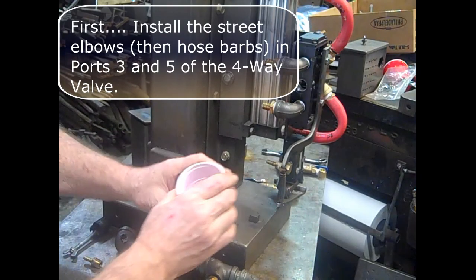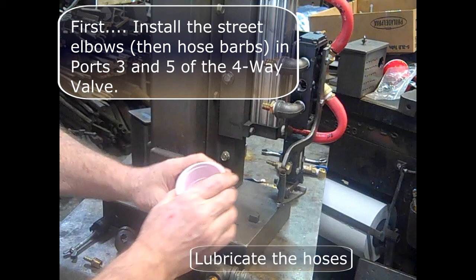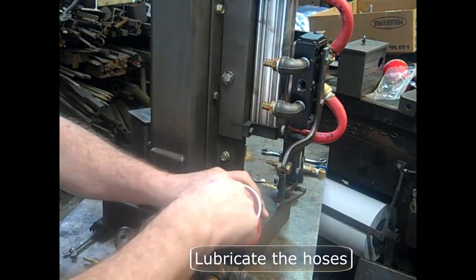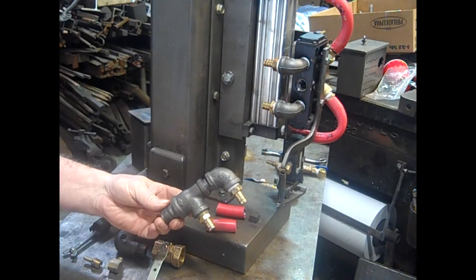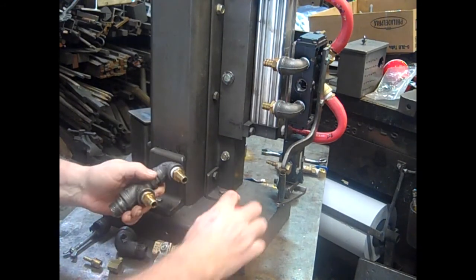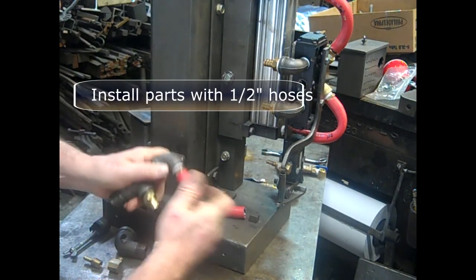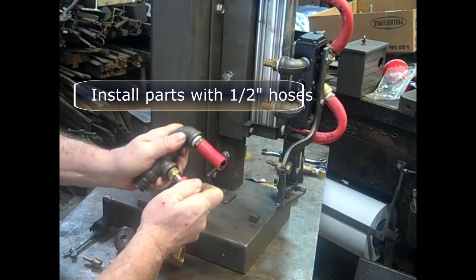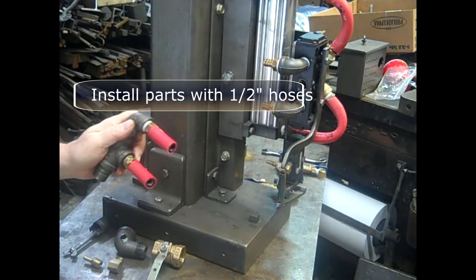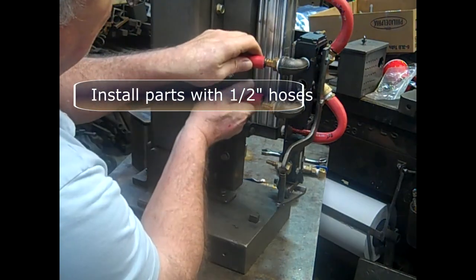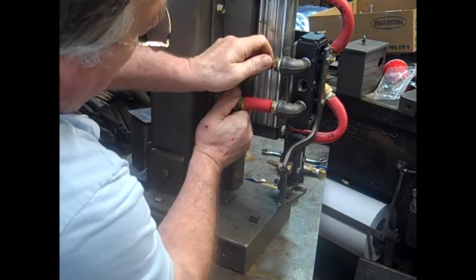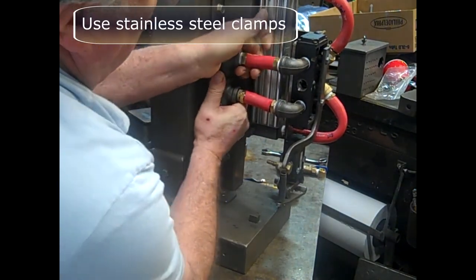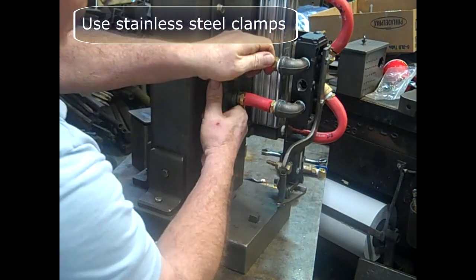First, install the street elbows, then the hose barbs in ports three and five of the four-way valve. And then install them with the hoses. Use stainless steel clamps on all the hoses.